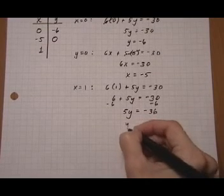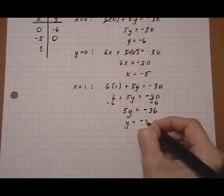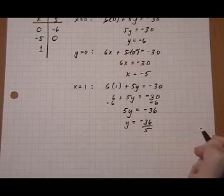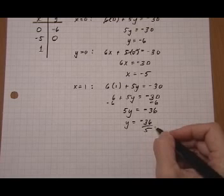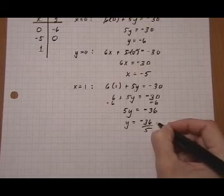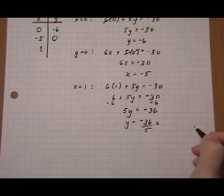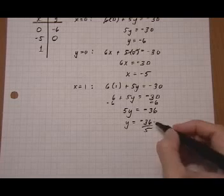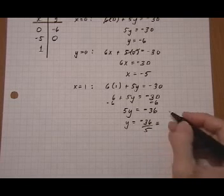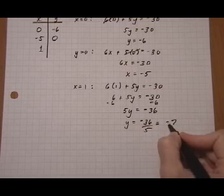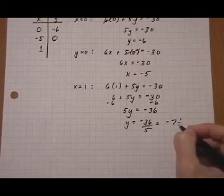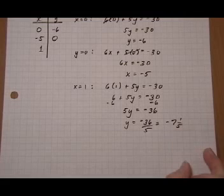And then I divide both sides by five. Y equals negative 36 over 5. Now that doesn't work out to be an integer, but that's all right. That happens a lot when you're finding points for a linear equation. So we're going to go ahead and say five goes in seven times to be 35, and there's a negative that we carry over, and there's one left over.